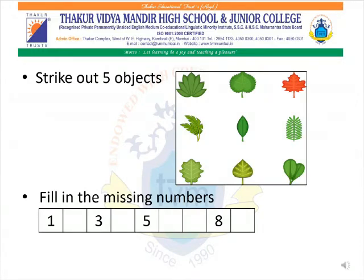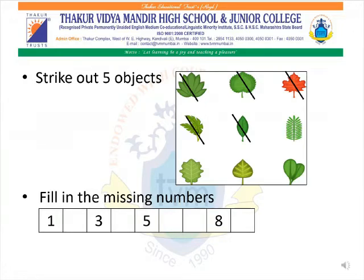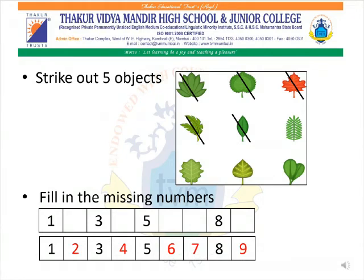Now we move on to question number 5: Strike out 5 objects. In the box we have 9 objects and we have to strike out 5 objects. Come on students, let us begin: 1, 2, 3, 4 and 5. Very good students! Now the last question: Fill in the missing numbers. Which number comes after 1? Number 2. After 3? Number 4. After 5? Number 6. After 6 we write 7, and after 8 the last number is 9. Let us read all the numbers together: 1, 2, 3, 4, 5, 6, 7, 8 and 9.